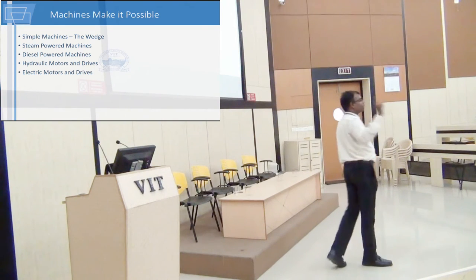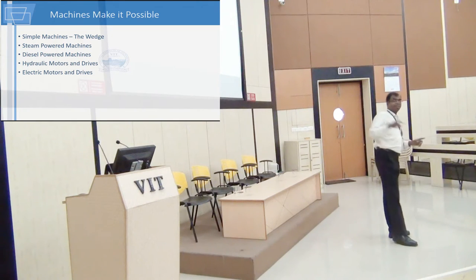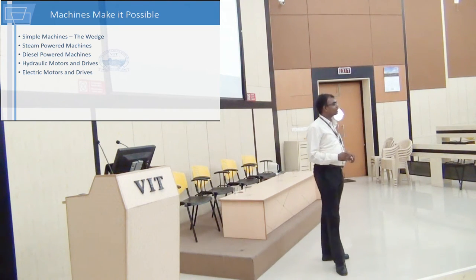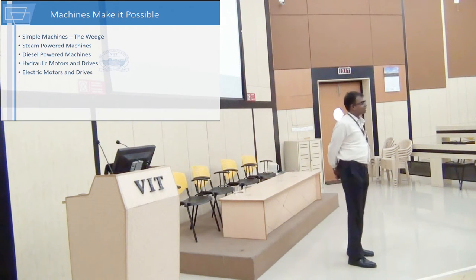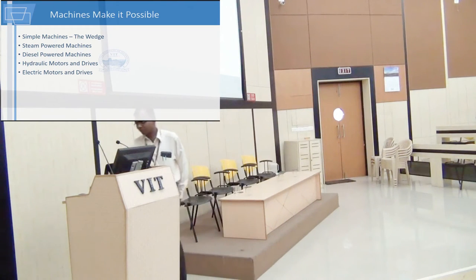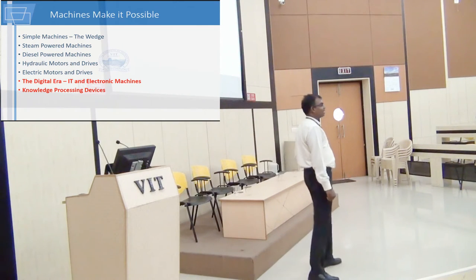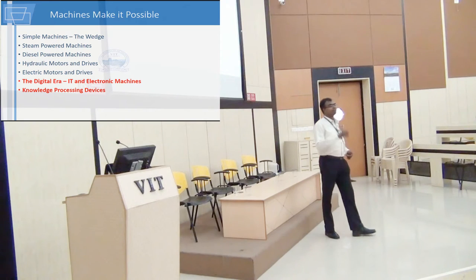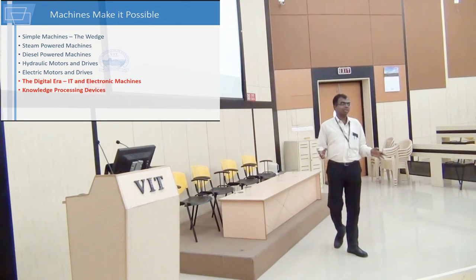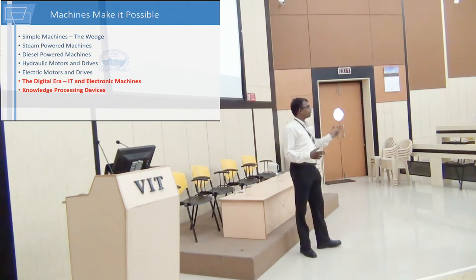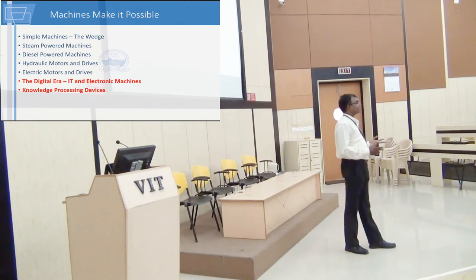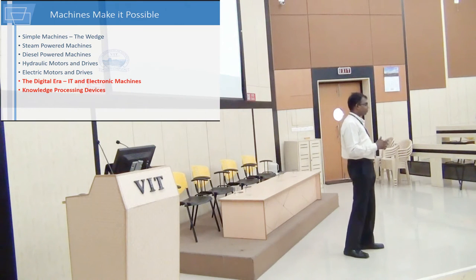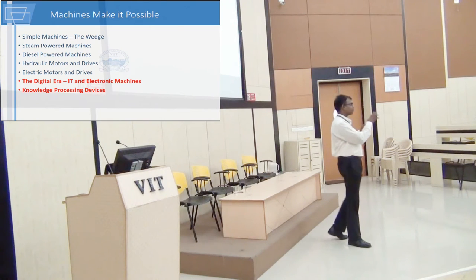Besides the five types of machines mentioned, are there any other types? Knowledge processing machines. Today we are in the age of Building Information Modeling. BIM can put so much information into a drawing or a model. We had two-dimensional drawings where you can represent x and y only on paper. It is very difficult to bring an isometric view onto a drawing and still expect people to understand it.